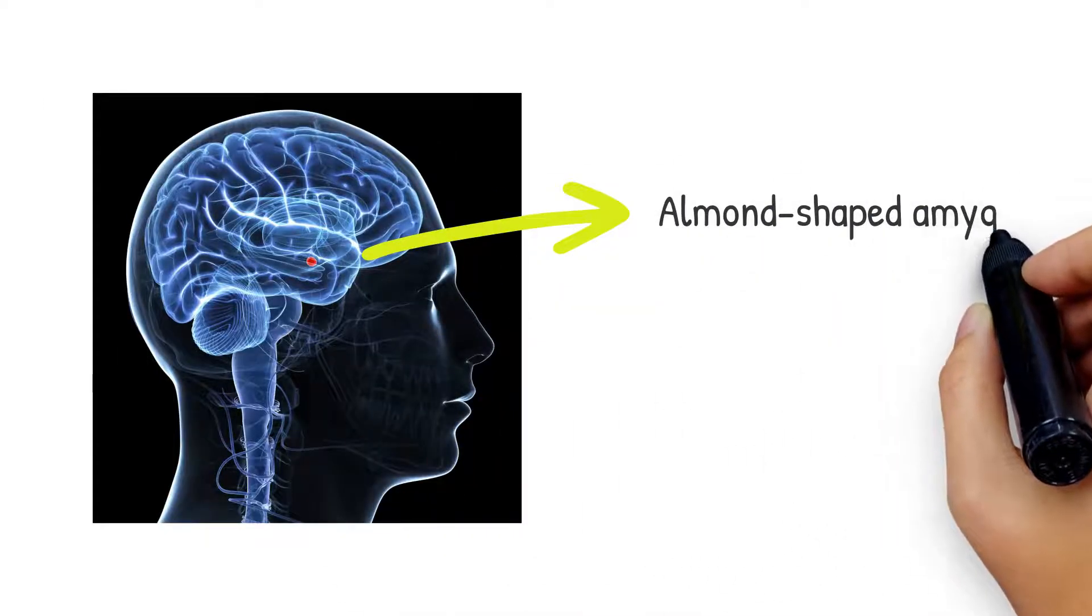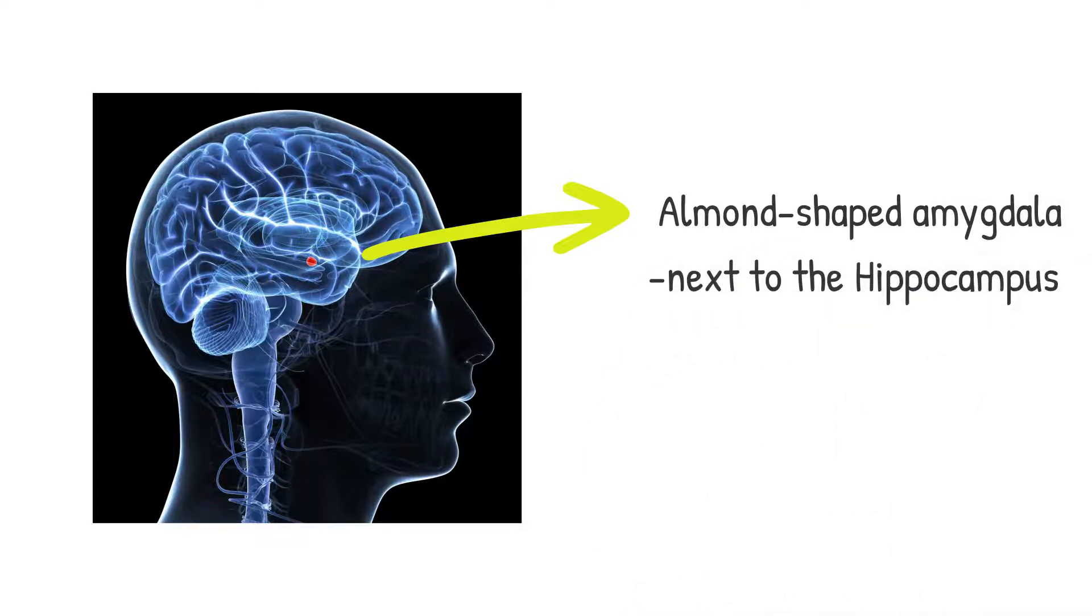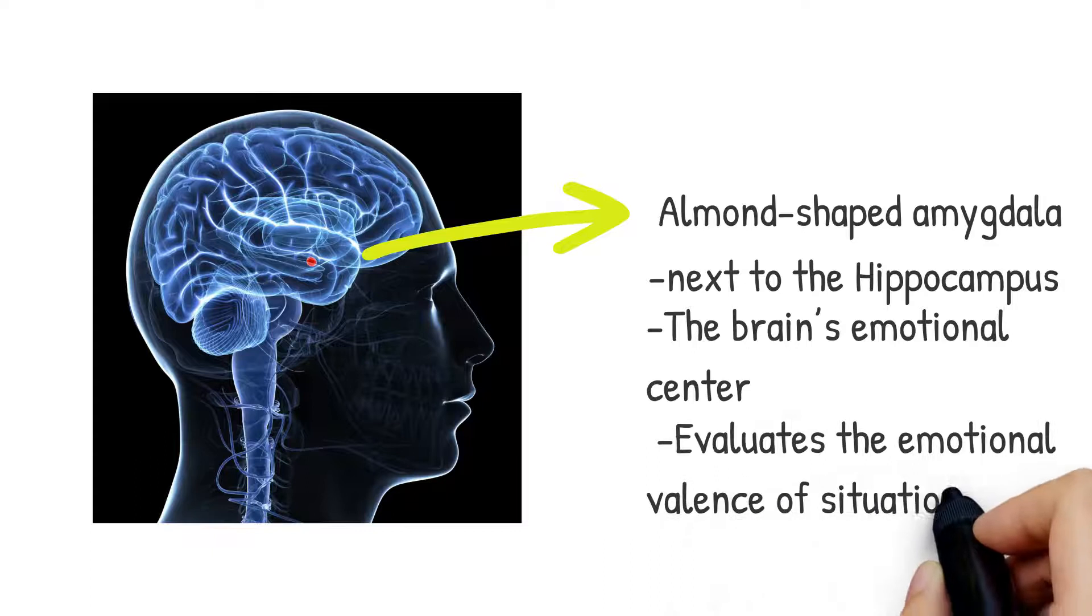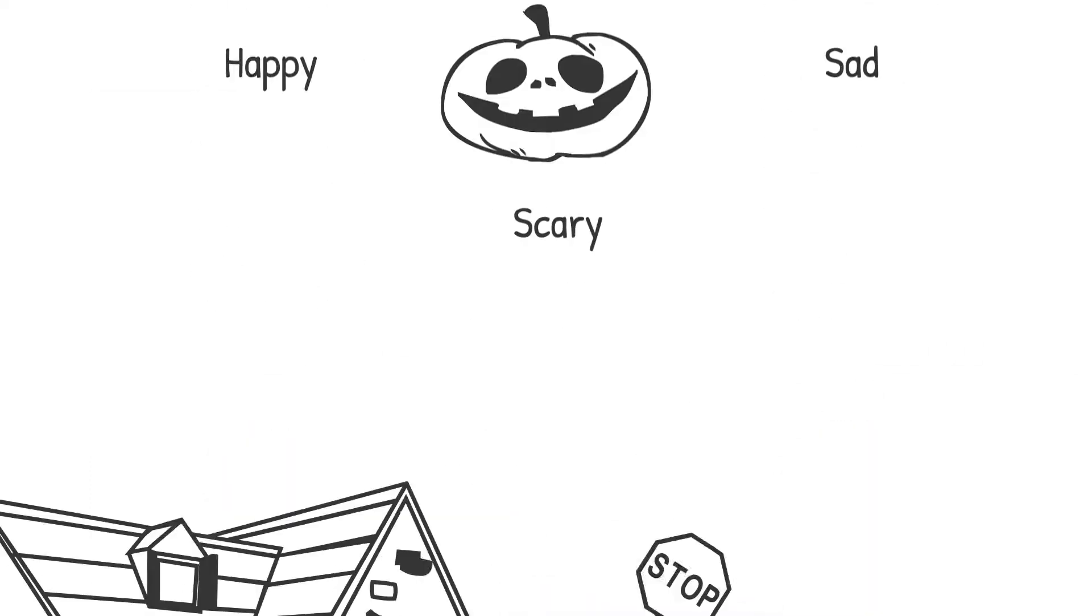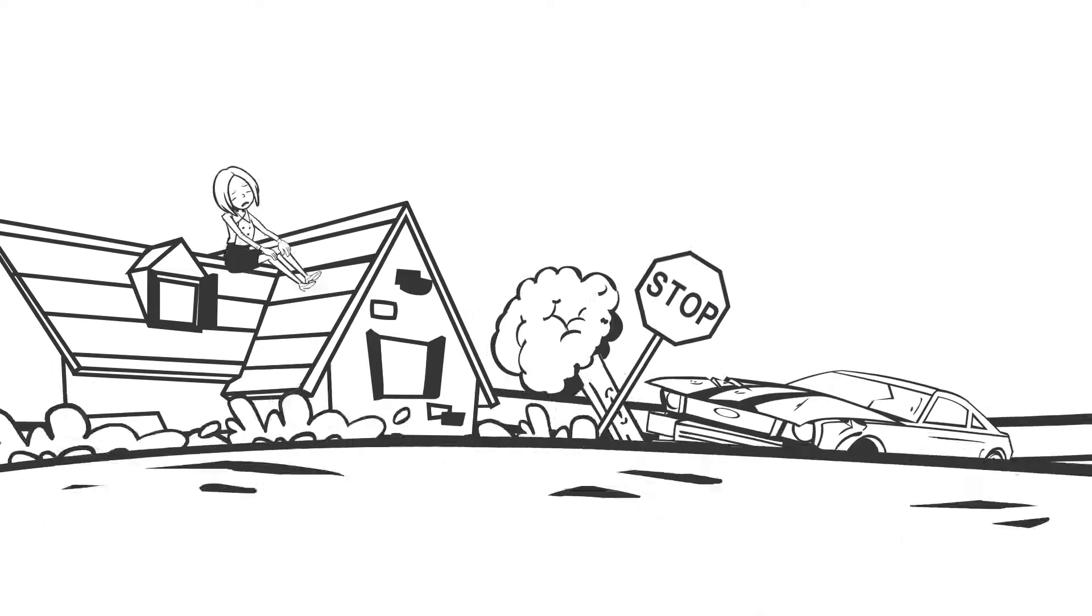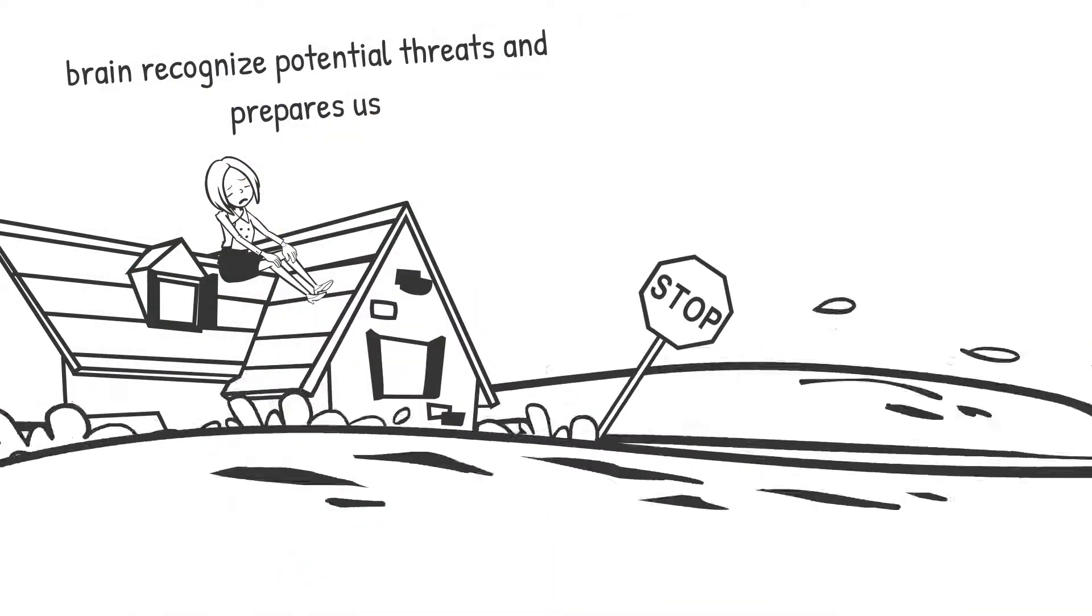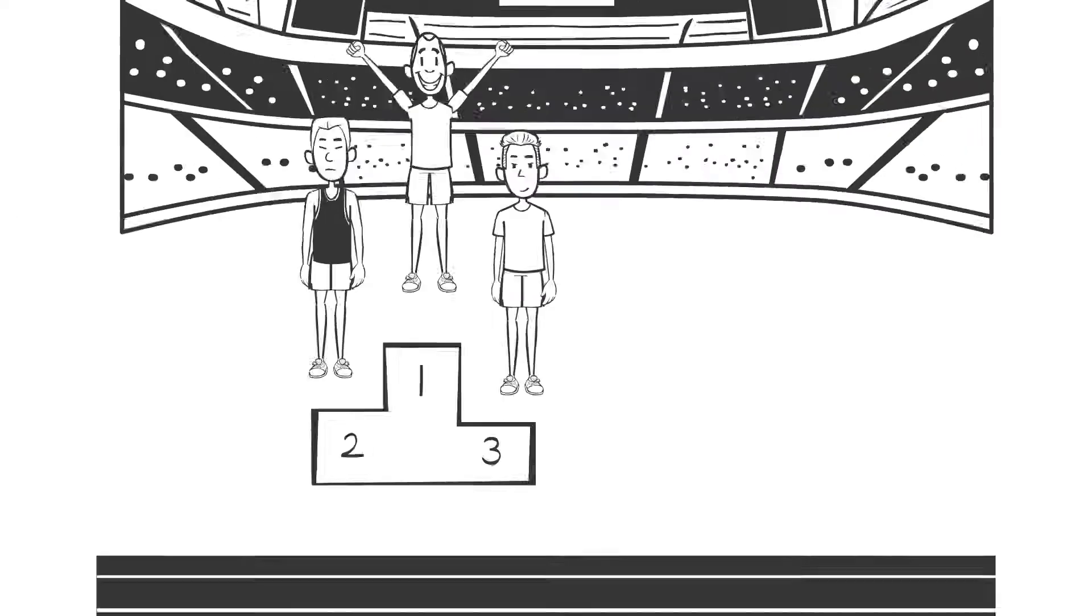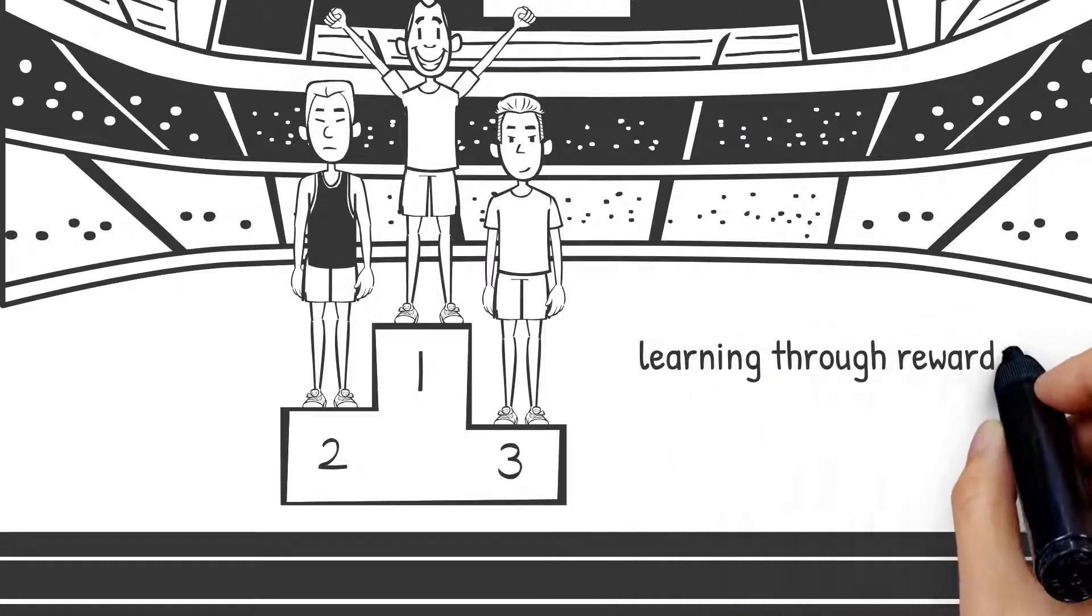The amygdala is located right next to the hippocampus. Known as the brain's emotional center, it evaluates the emotional valence of situations—that is, happy, scary, sad, etc. It helps our brain recognize potential threats and prepare for fight-or-flight reactions by elevating our breathing and heart rates. It is also responsible for learning through rewards or punishment.